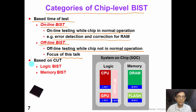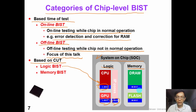We can also classify BIST based on the circuit under test. For example, in a large system-on-chip, or SOC, we can have logic cores as well as memory cores. If we want to test the logic cores, we will need logic BIST. If we want to test the memory cores, we could have memory BIST.